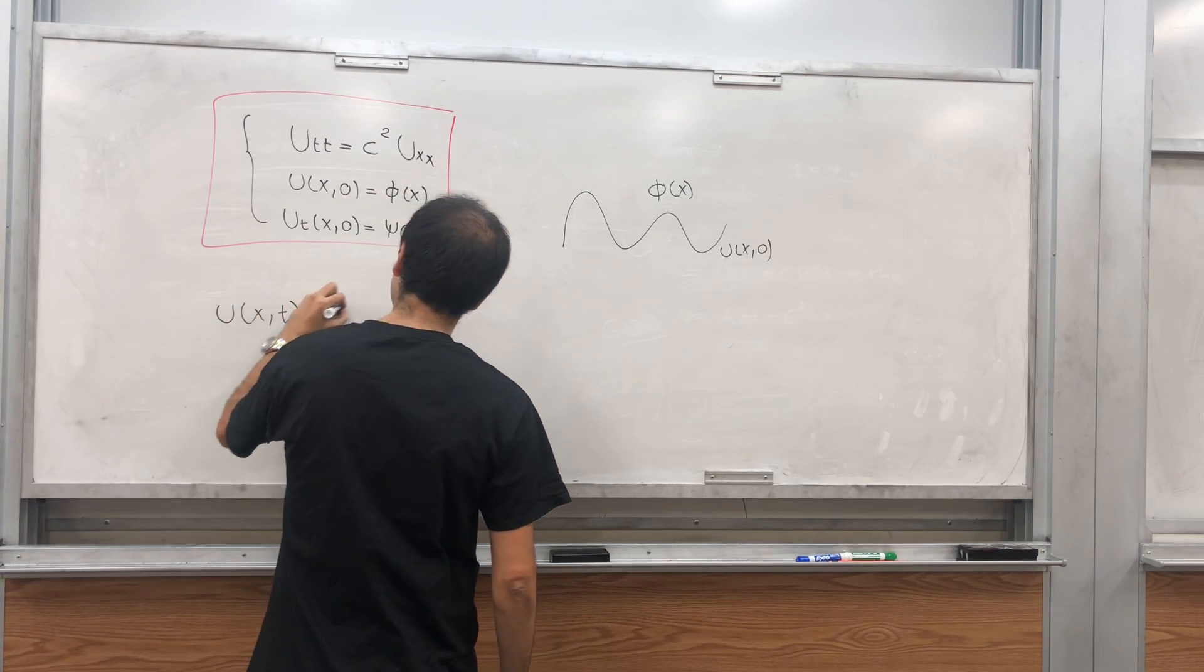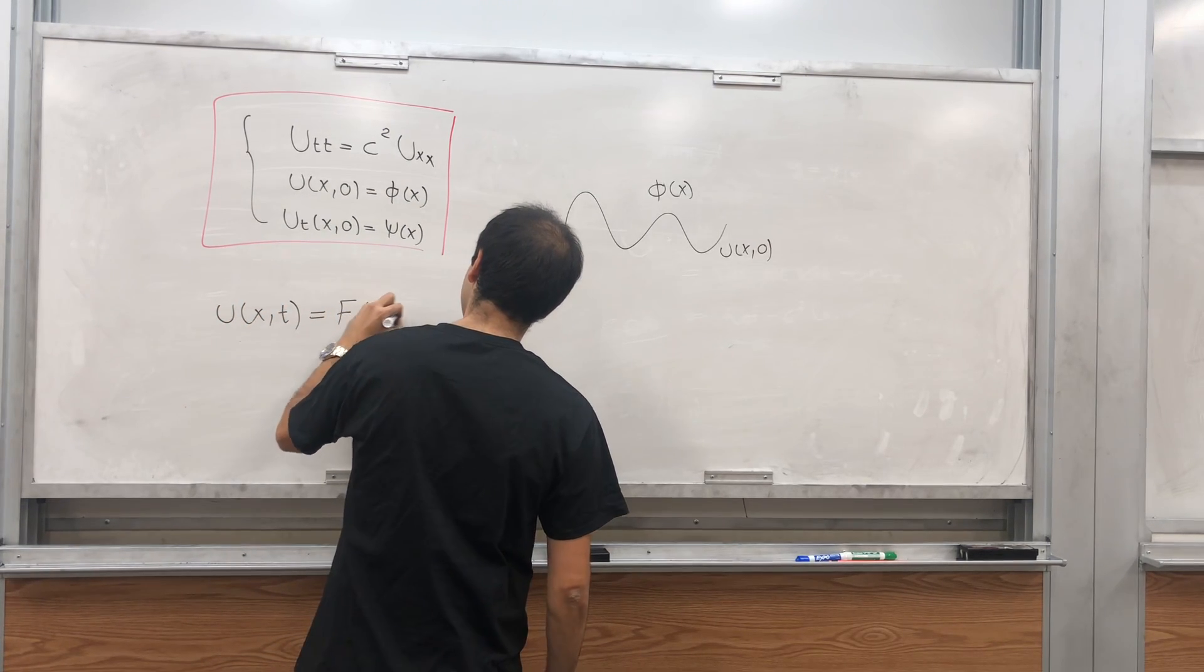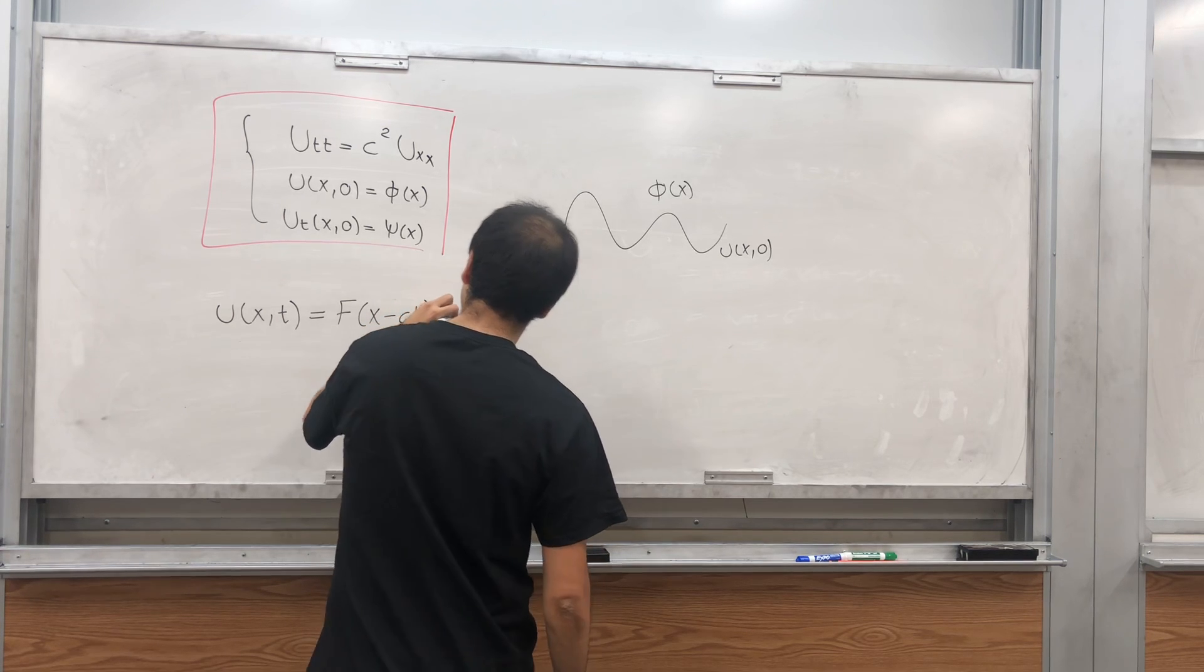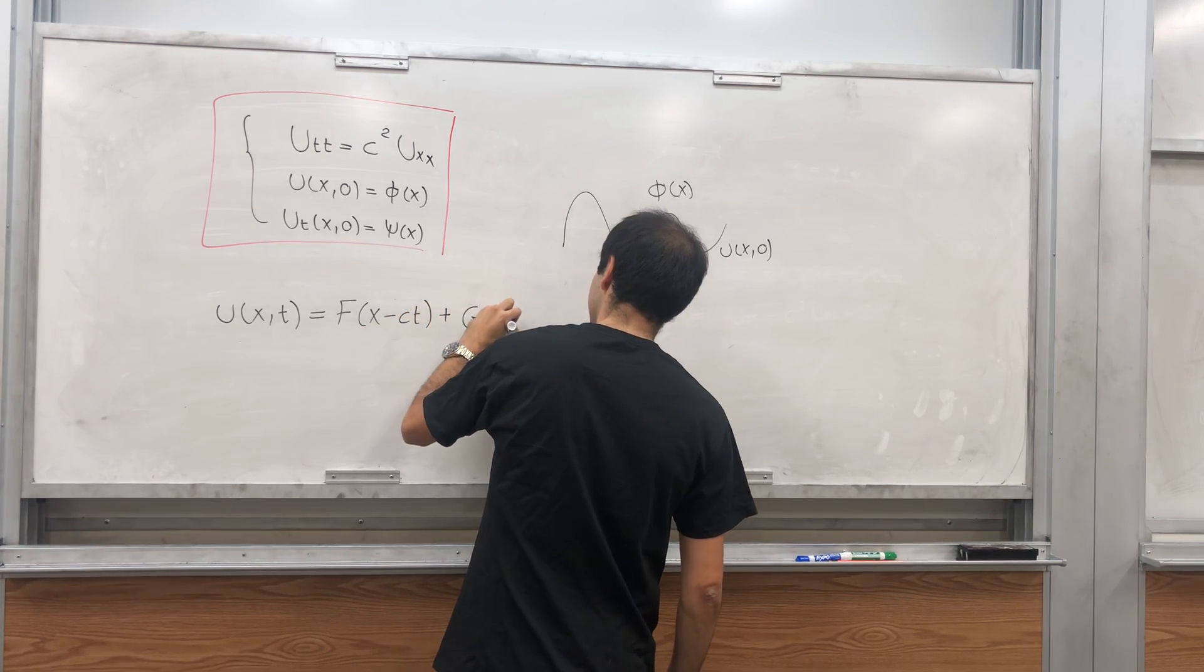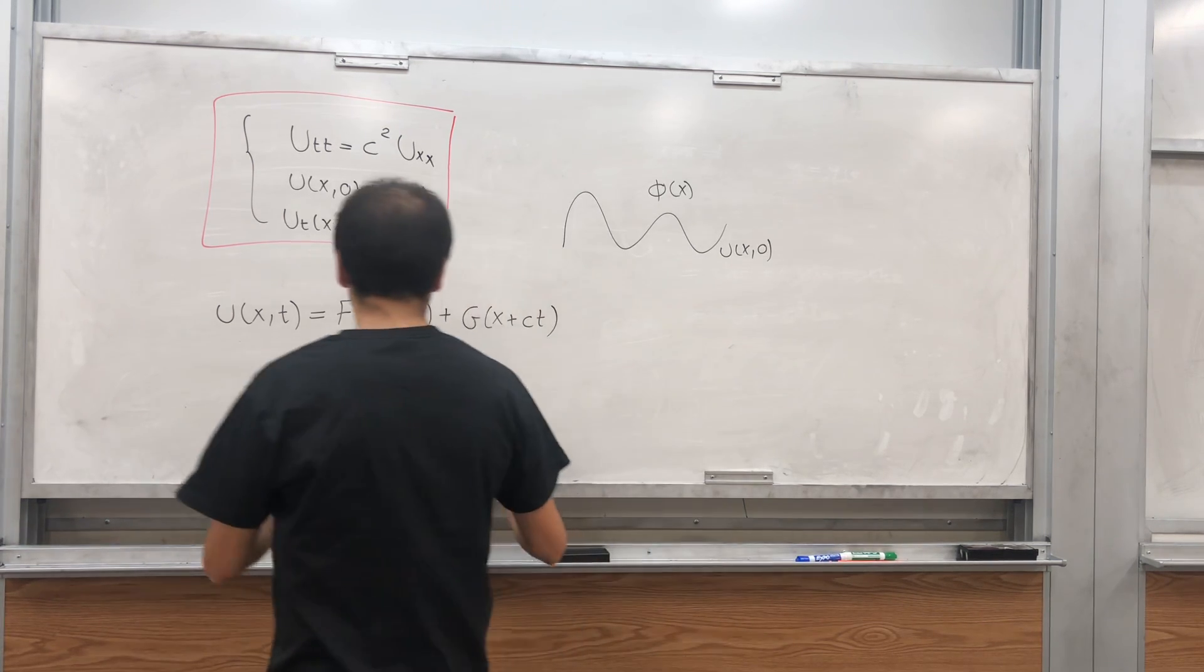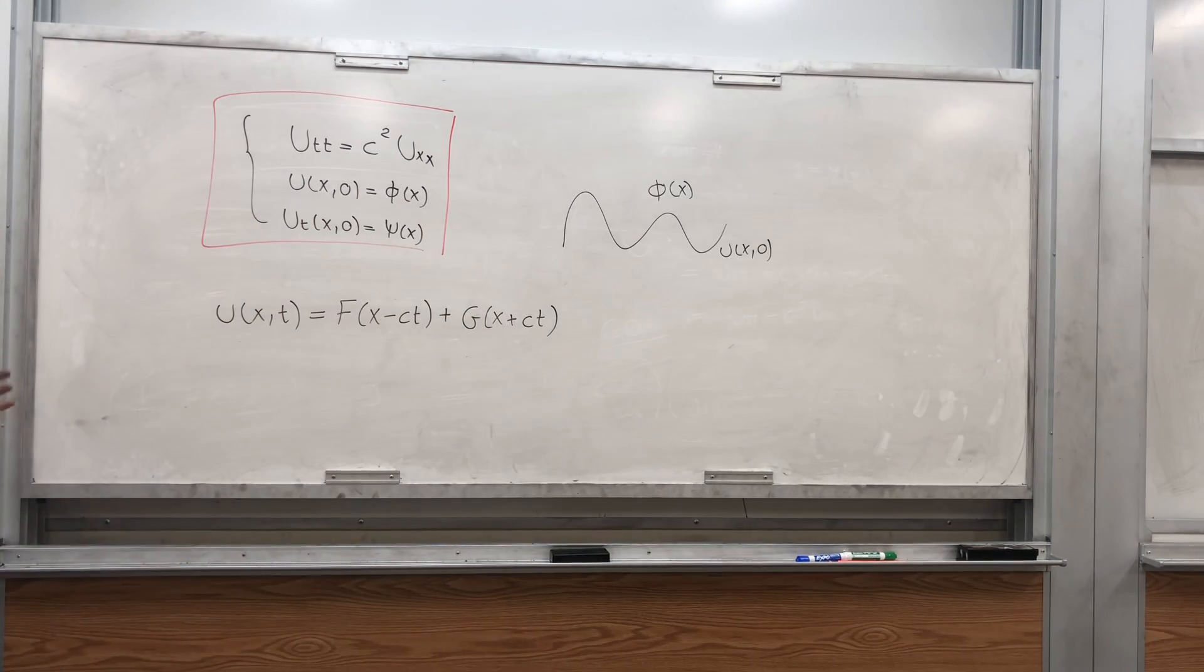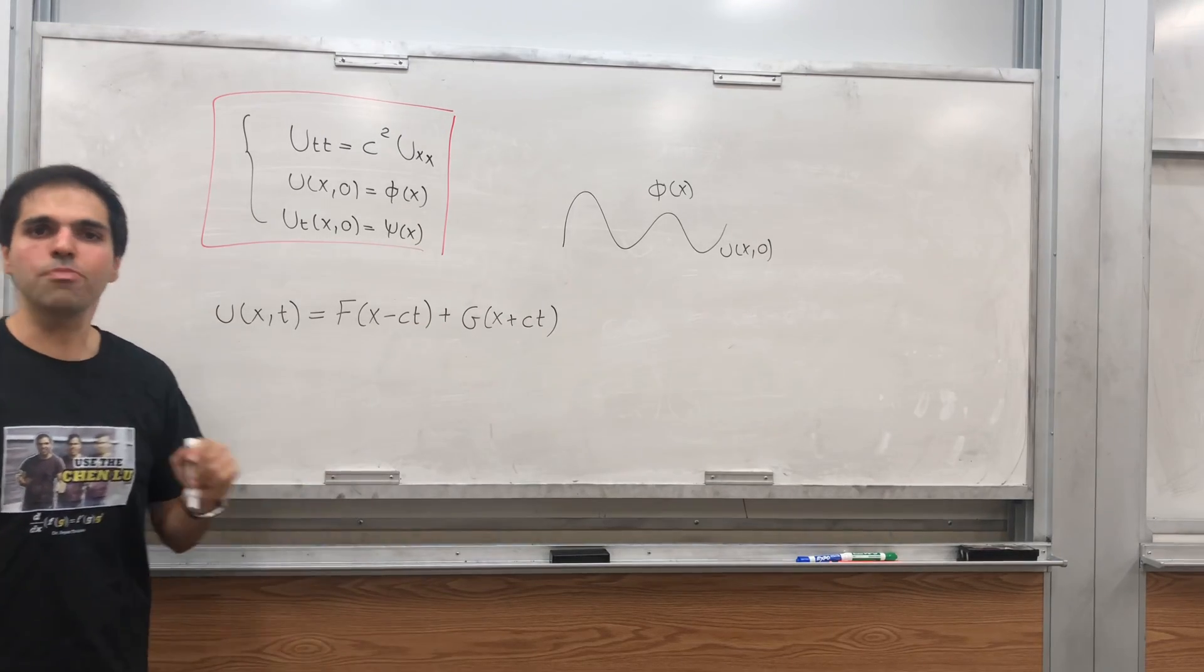And we eventually got something like that: u of x,t is capital F of x minus ct plus capital G of x plus ct. Maybe I had the signs mixed up, but it's still the correct solution because f and g are arbitrary.